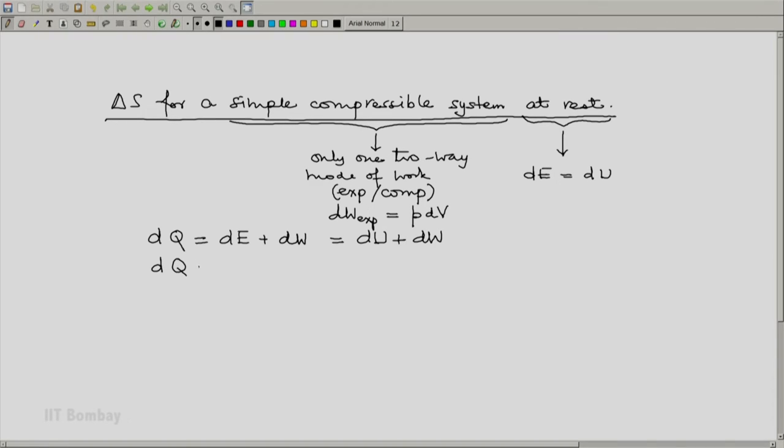Now we want to execute a process reversibly, and that means this dw must be only two-way mode of work. So dq reversible will become du plus pdv. Because now we are restricting dw to only two-way modes of work, since we have a simple system there is only one two-way mode of work, and dw equals dw expansion which is pdv.